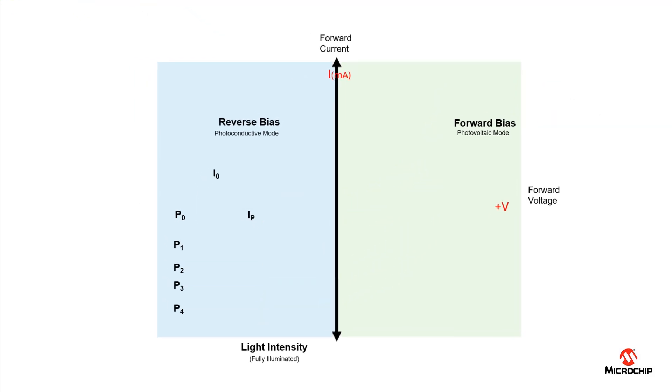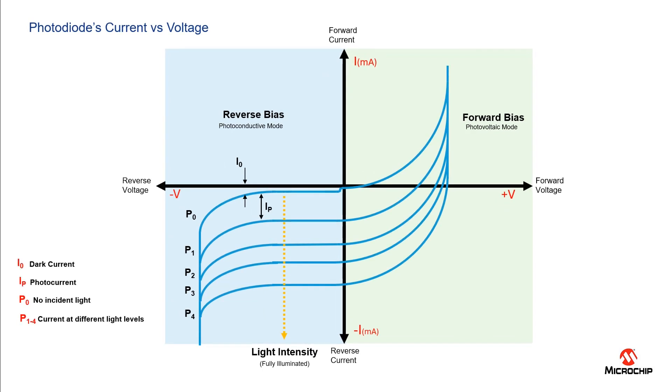Now right next to the reverse bias section we have the breakdown voltage highlighted in purple. In this area the photodiode should not be operated beyond the breakdown voltage. This will damage the component.